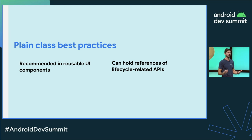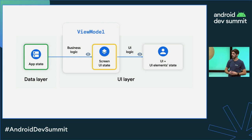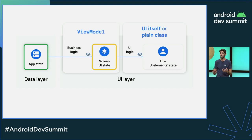So if an activity gets recreated due to a configuration change, you get a new instance of this class, which is safe. Back to our diagram: business logic and screen UI state should be managed by a screen-level state holder — a ViewModel in this case — and the UI logic and UI element state are handled in the UI itself or in a plain class. Sometimes UI element state needs to be hoisted out into the ViewModel because it's needed for business logic, and that's totally fine.